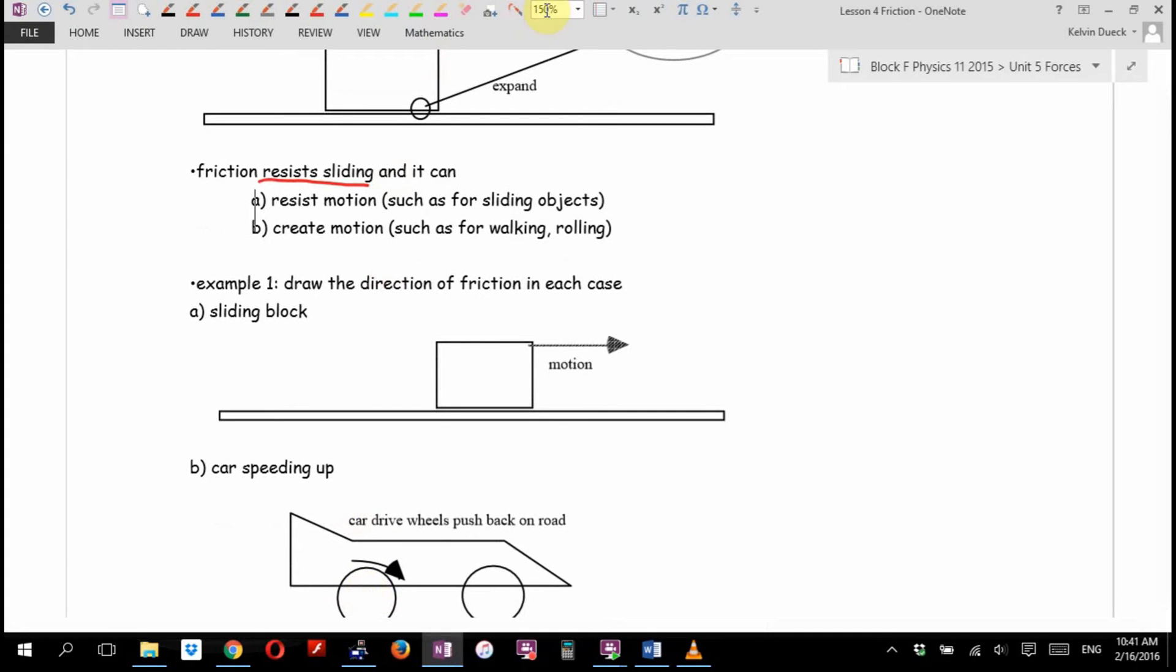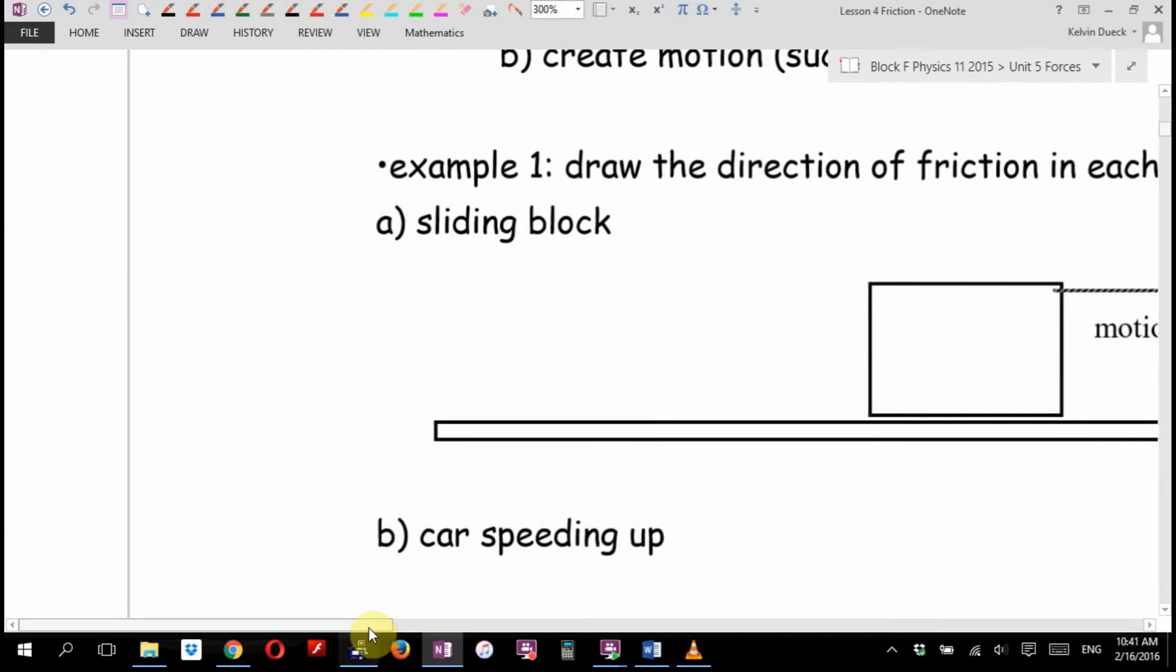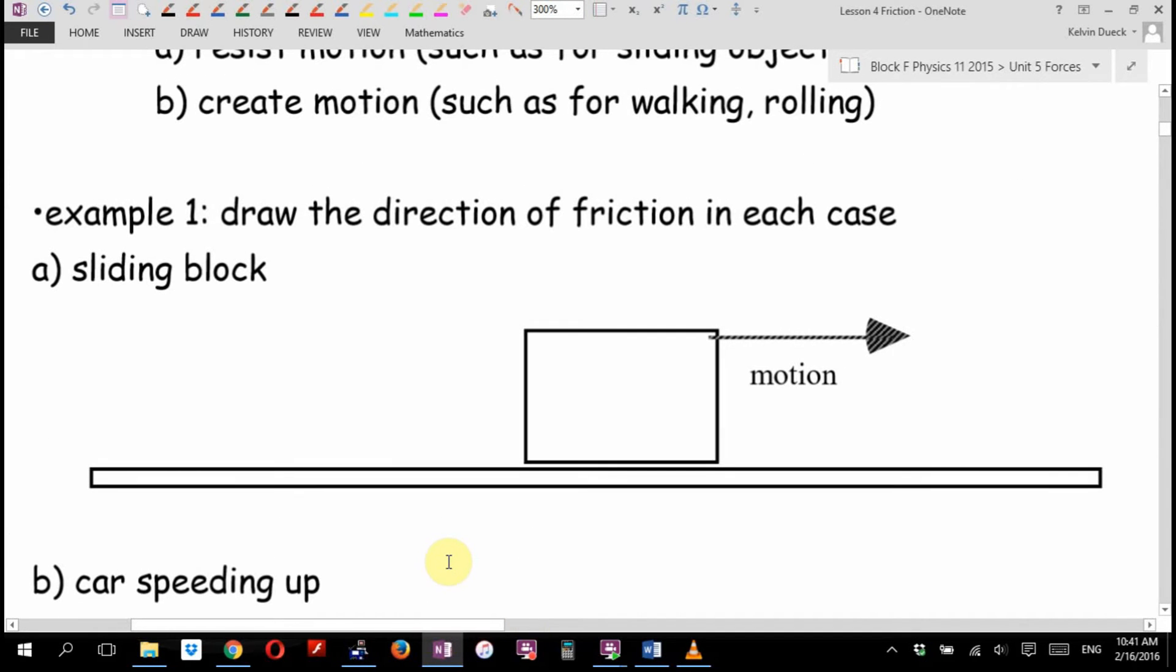Example one says, draw the direction of friction in each case. Friction resists the motion of the object. Don't write this down, but right there, what way is the block moving? To the right? Friction will resist that motion. So which way will friction be pointing? To the left. The force of friction. I don't know why I put the R there. Most textbooks just do this. But for some reason, years ago, I got in that habit and I can't break it.